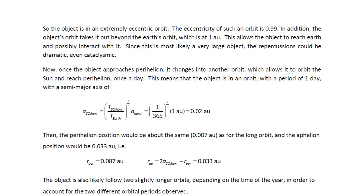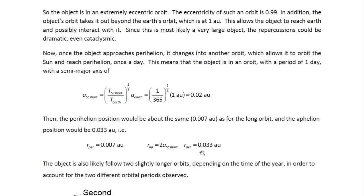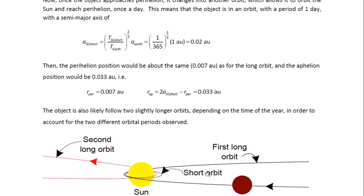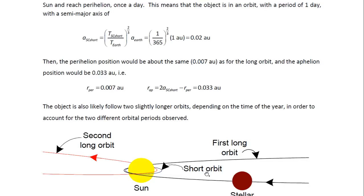Since this is most likely a very large object, the repercussions could be dramatic, even cataclysmic. Once the object approaches perihelion, it changes into another orbit which allows it to orbit the sun and reach perihelion once a day. This means the object is in an orbit with a period of one day and a semi-major axis of 0.02 AU. The perihelion position would be the same — 0.007 AU — which means the aphelion position turns out to be 0.033 AU. The object is also likely to follow two slightly longer orbits depending on the time of year, in order to account for the two different orbital periods observed.